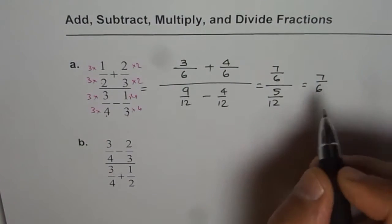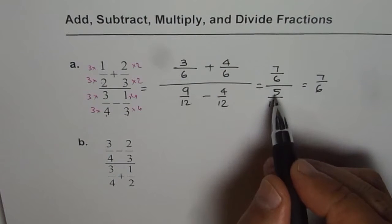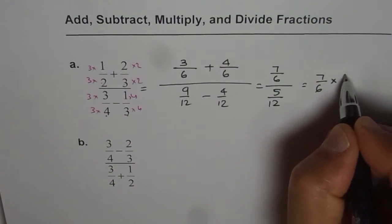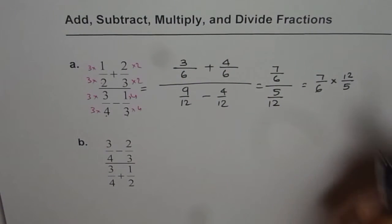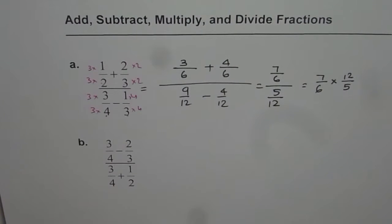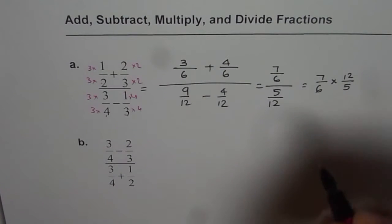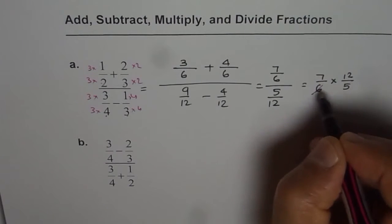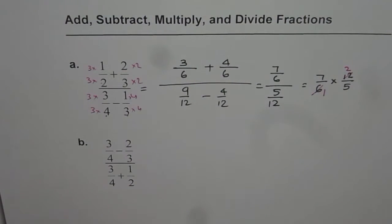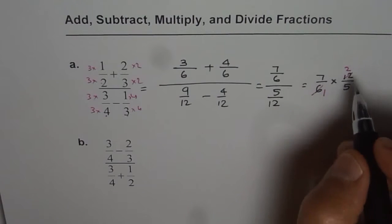We have 7 over 6 divide by 5 over 12, which is same as times 12 over 5. Division is same as multiplication by its reciprocal. Now we can simplify by dividing by 6. We get 1 and 2.